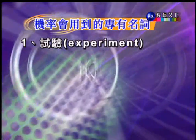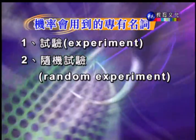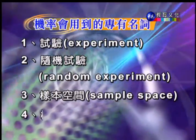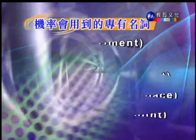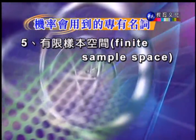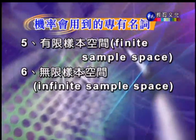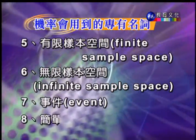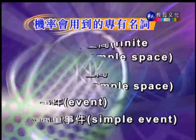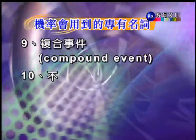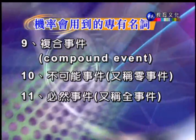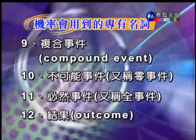機率會用到的專有名詞包括：1. 試驗、2. 隨機試驗、3. 樣本空間、4. 樣本點、5. 有限樣本空間、6. 無限樣本空間、7. 事件、8. 簡單事件、9. 複合事件、10. 不可能事件、11. 必然事件、12. 結果（outcome）。